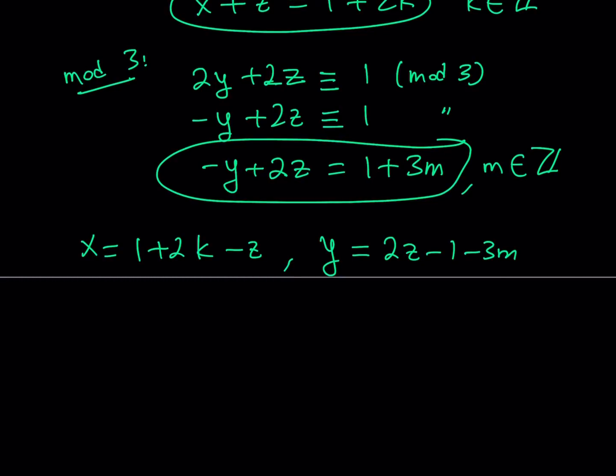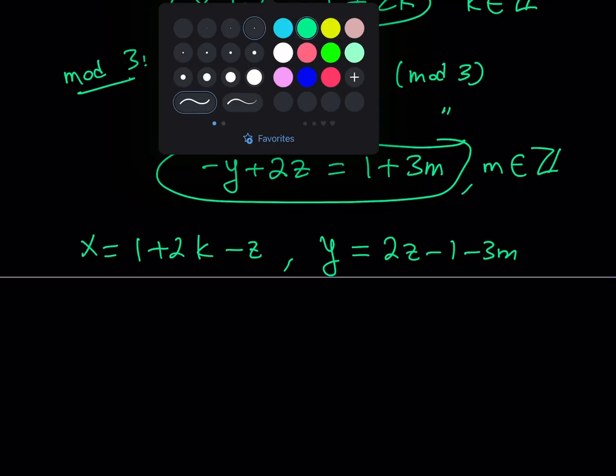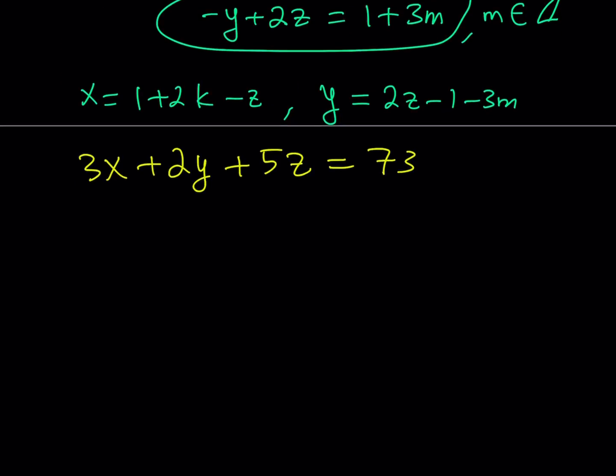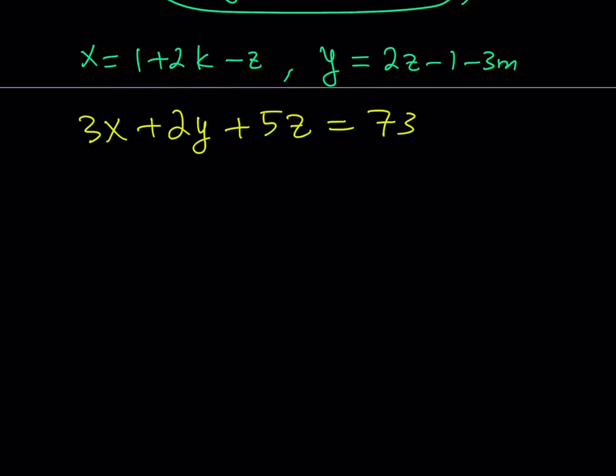These are my two variables in terms of the other variables. Of course, we introduce new variables, but that's okay, we're going to get rid of them. Now I have x and y in terms of z and m and k. So let's go ahead and plug all these into the original equation. It was 3x plus 2y plus 5z equals 73. So now I'm going to substitute x replaced with 1 plus 2k minus z, y replaced with 2z minus 1 minus 3m, and leave the z alone.